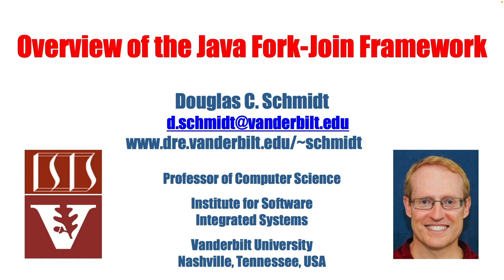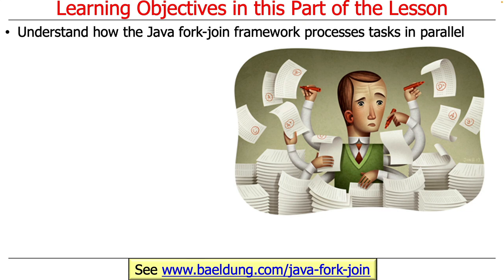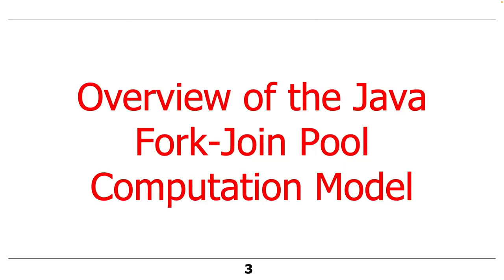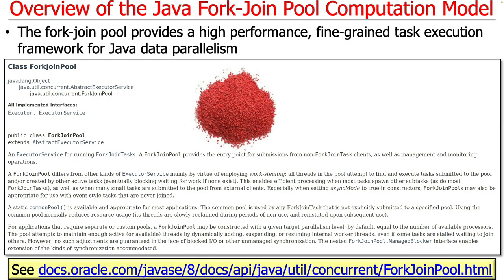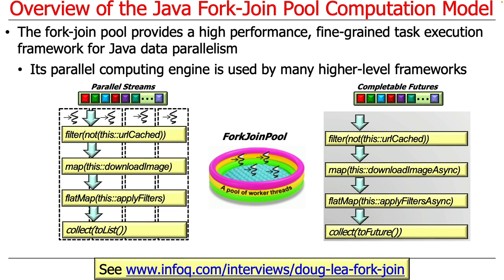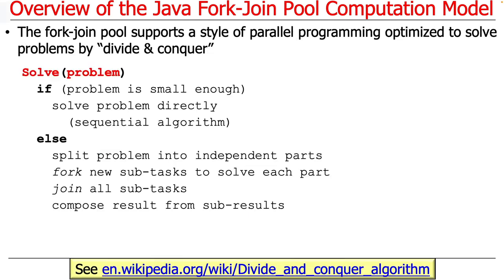It's finally time to start talking about our first real concurrency and parallelism framework: the Java Fork/Join framework. The fork/join framework has a pool of threads — essentially platform threads and lightweight threads — that provide a high-performance, fine-grained task execution framework to do data parallelism and object-oriented parallelism in Java. It's a parallel computing engine used by other higher-level frameworks, including parallel streams and CompletableFutures. You can also use it with reactive streams if you choose to.